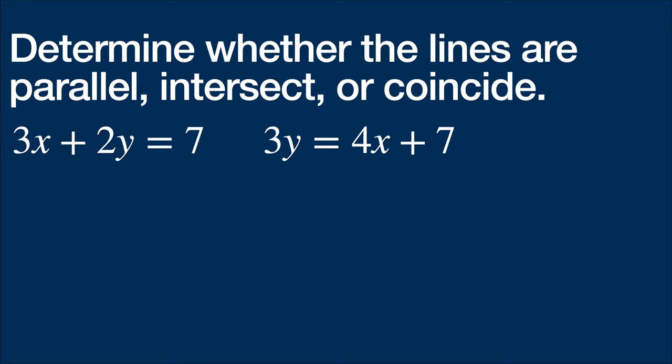All right, now we have our last set, and so let's look at it. So we have 3x plus 2y equals 7 and 3y equals 4x plus 7. So the first thing that we actually need to do is to get these into slope-intercept form. So in this case, I go minus 3x, -2y equals -3x plus 7, divide by 2. Y equals -3 halves x plus, I'm going to say 3.5, you could say 7 halves.